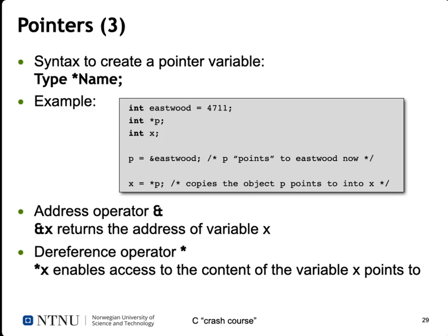So p points to Eastwood. The final line shows something new: when we say x equals asterisk p, we dereference that pointer — we look up the memory location, find what's stored there, which is 4711, and copy that value into x. To repeat: the address operator ampersand returns the address of a variable, and the dereference operator asterisk enables access to the content of the variable pointed to by the pointer.